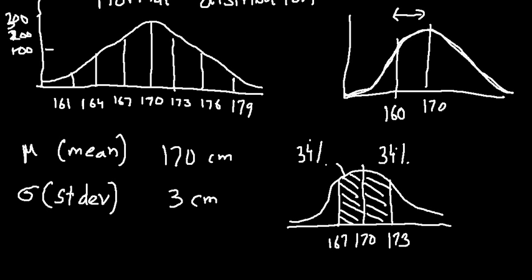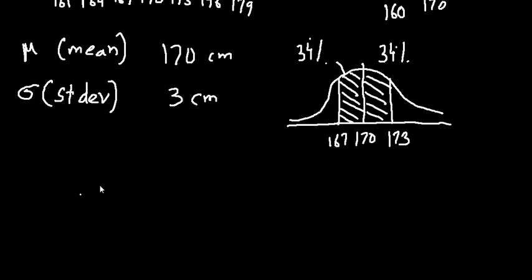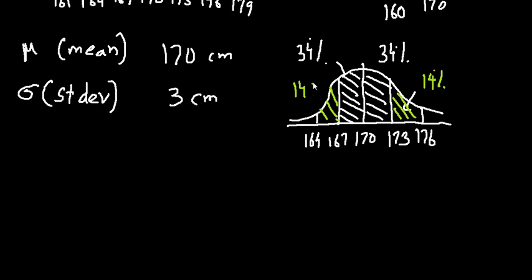If I go two standard deviations above the mean, which is 176 cm, the population incorporated in that region — between 173 and 176 — is approximately 14%. And on the other side, one standard deviation below the mean at 164 cm also accounts for approximately 14% of the population.